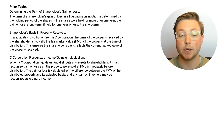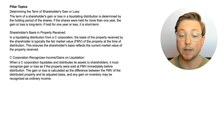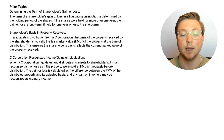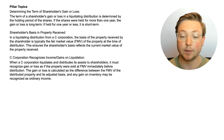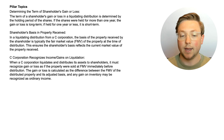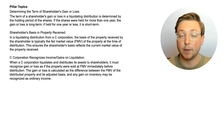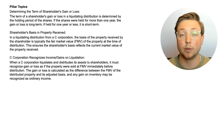Finally, when a C corporation liquidates and distributes its assets to shareholders, it must recognize gain or loss as if the property were sold at fair market value immediately before distribution. The gain or loss is calculated as the difference between the fair market value of the distributed property and its adjusted basis. Any gain on inventory may be recognized as ordinary income. Even though it's being liquidated, taxes still apply — the C corporation is taxed on any income or gain it had.